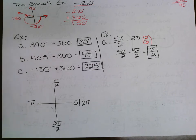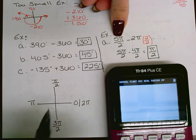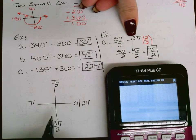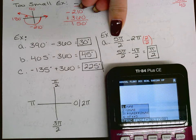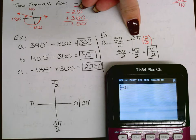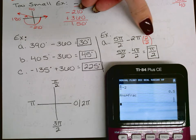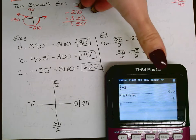Option 2: use the calculator. Once you know you need to subtract 2 pi, press alpha y-equals for the fraction button, enter 5 over 2 minus 2 (ignoring pi), press enter, then math-frac to get one-half, and put the pi back in to get pi over 2. Option 3: convert to degrees first, find coterminal in degrees, then convert back to radians — more steps, but avoids fraction arithmetic.